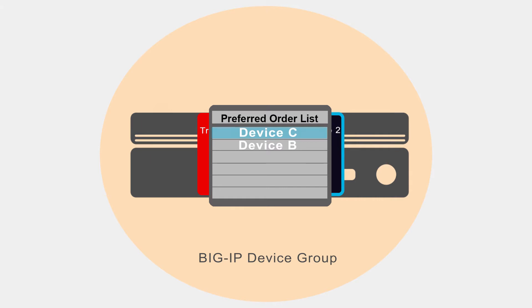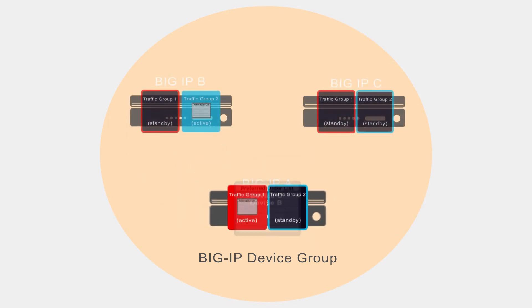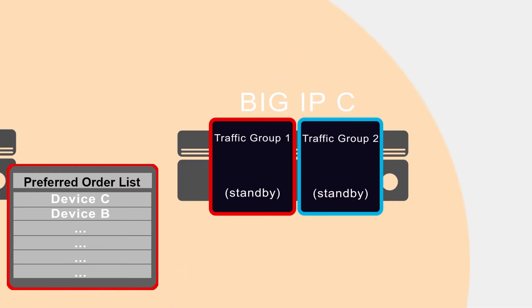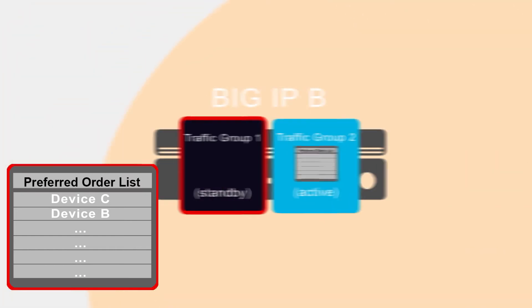If it's not available, the system will choose the second device in the list, and so on. In our example here, we can see that the list for traffic group 1 specifies that Big IP C should be next active for the traffic group if available, and if not, then Big IP B.